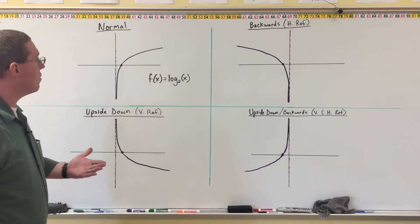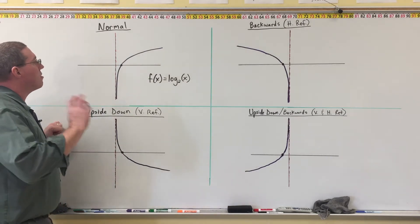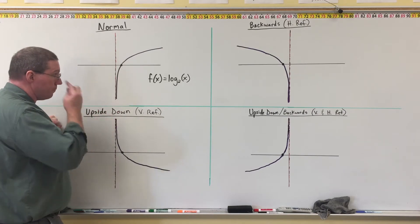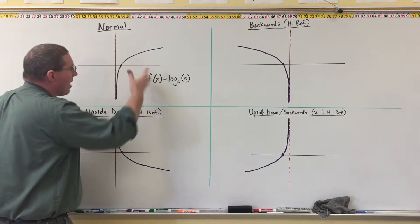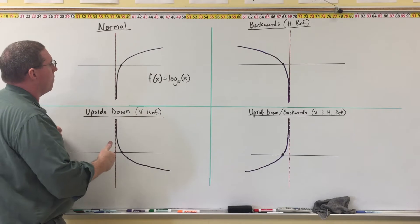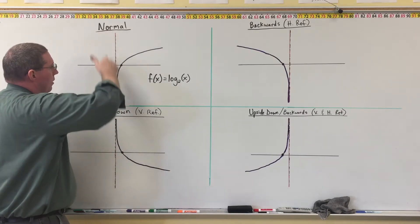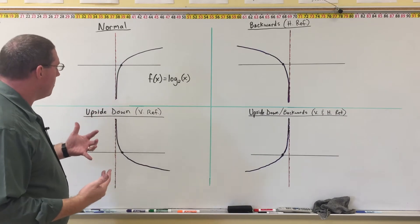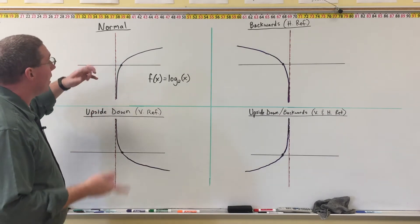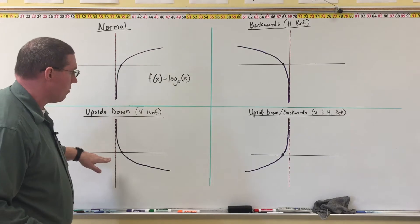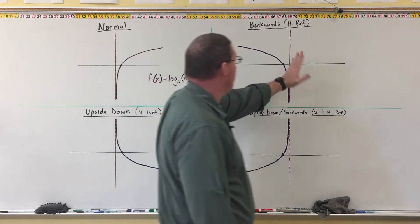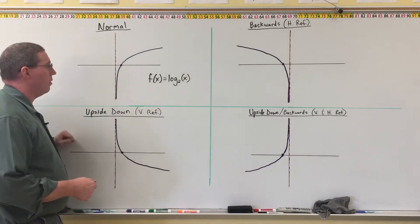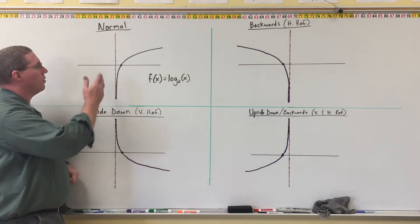Everything you learned from exponential functions can be transferred over to the graphs of logarithmic functions. The only real difference is that instead of everything being upside down or backwards relative to the x-axis, it's now going to be upside down and backwards relative to the y-axis. To be more specific, upside down is going to be relative to the x-axis and backwards is going to be relative to the y-axis. But really it depends on the asymptote.